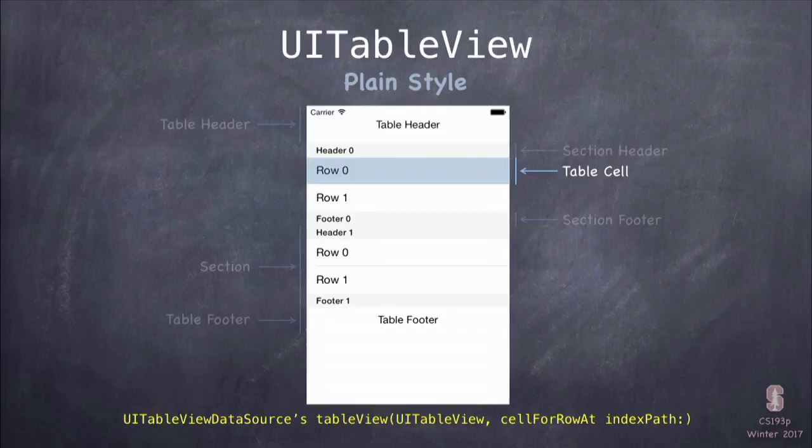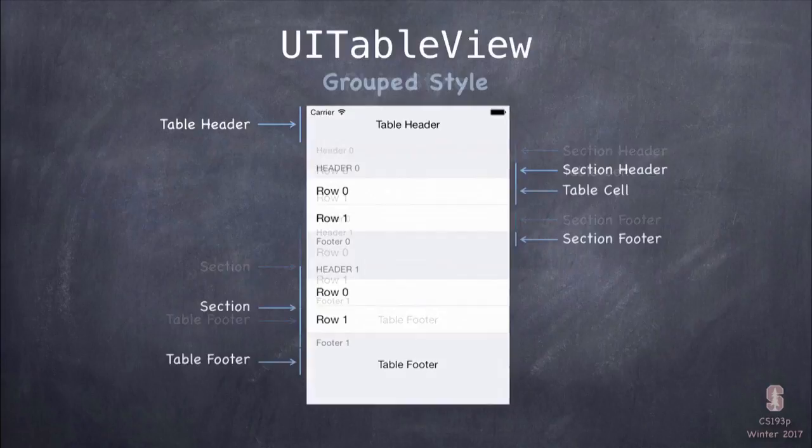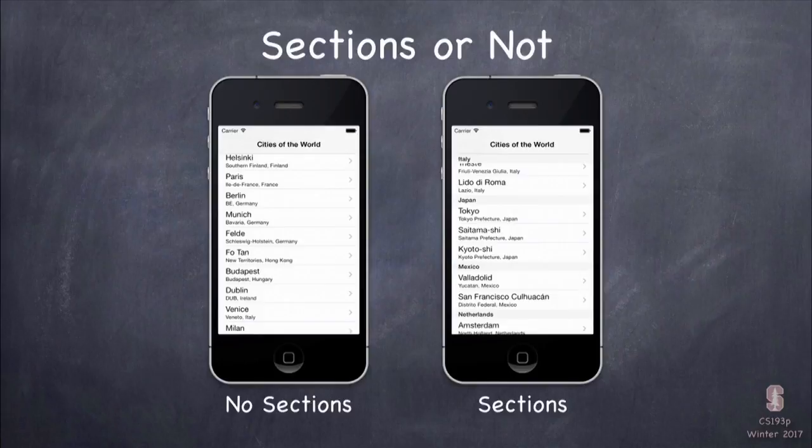Along the bottom you're seeing source code that kind of corresponds with these things — I'll get back to showing all of that in later slides. This naming applies to a plain-style table. All the same names work in grouped style too; everything just looks a little different but you still have header, footer, and sections.